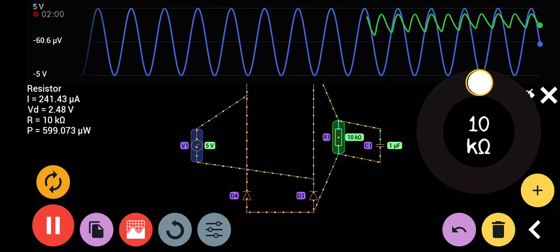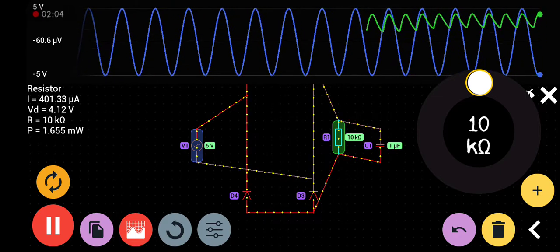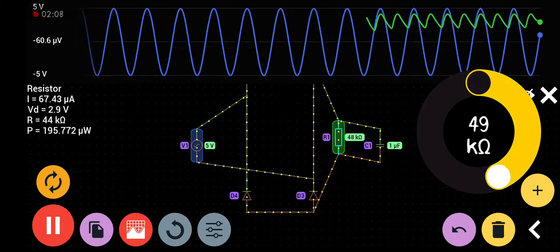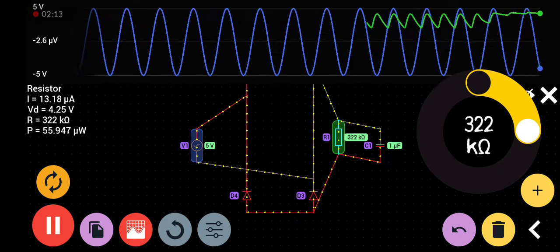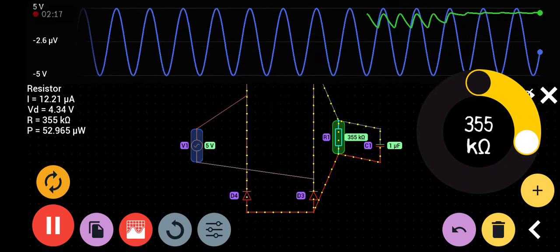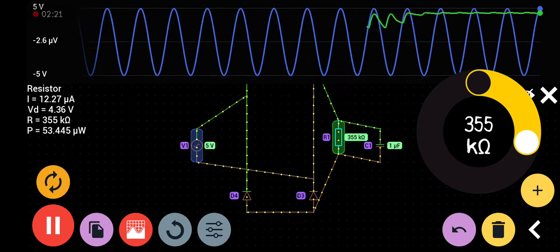see the ripples are much reduced. If we increase further to let's say 321 kilo-ohm, 330, 340 kilo-ohm, you can see almost pure DC voltage is flowing on the output.